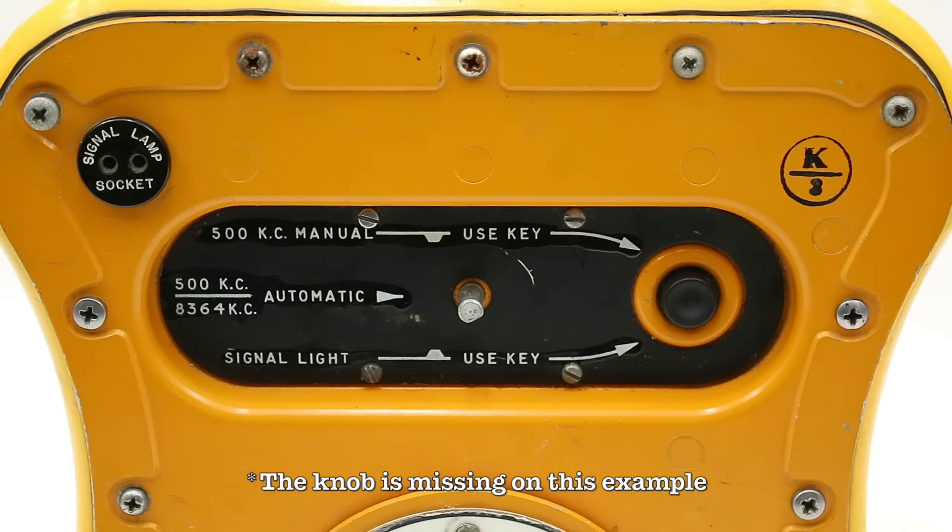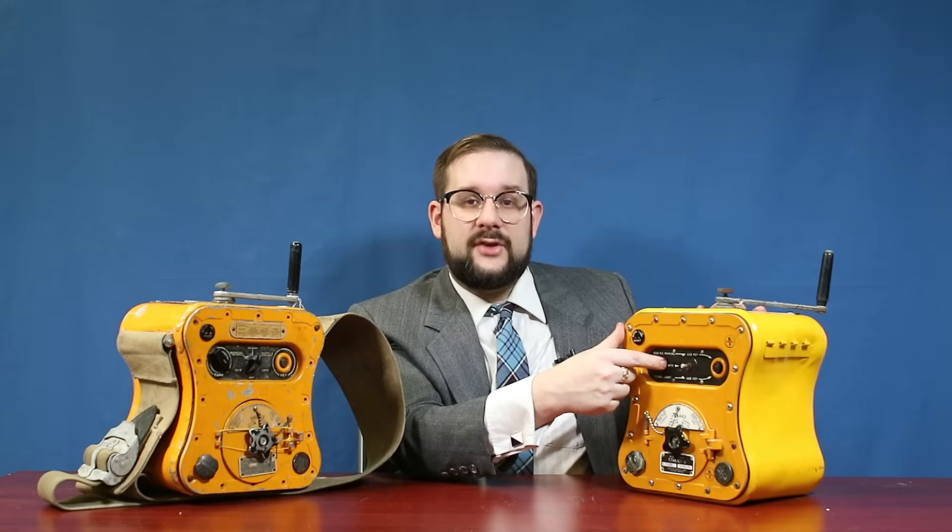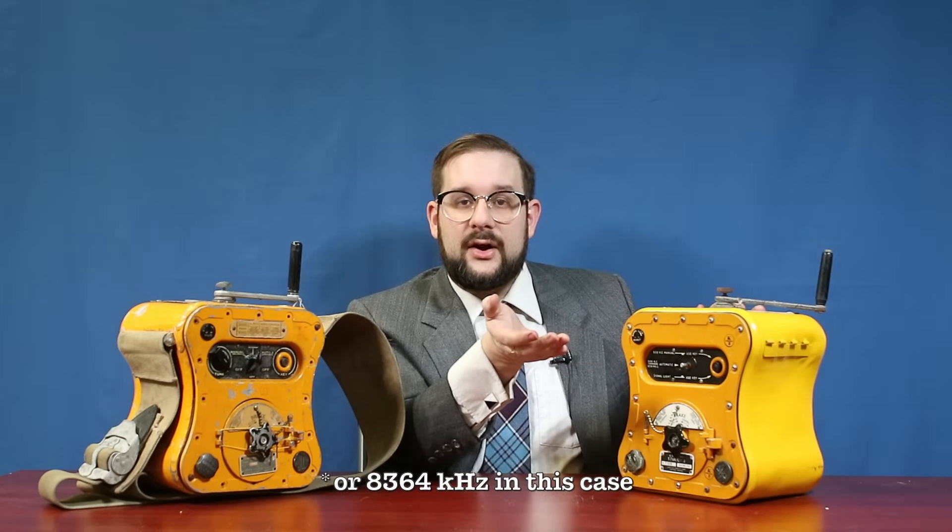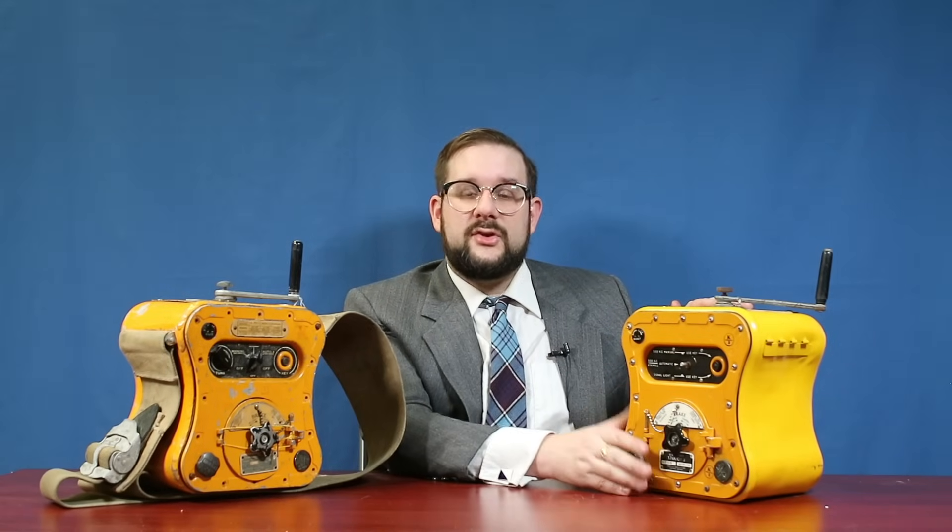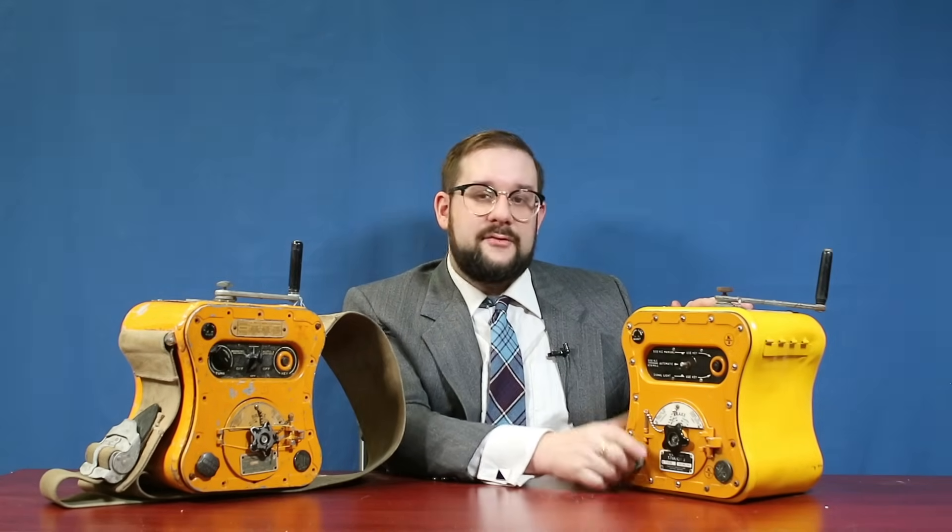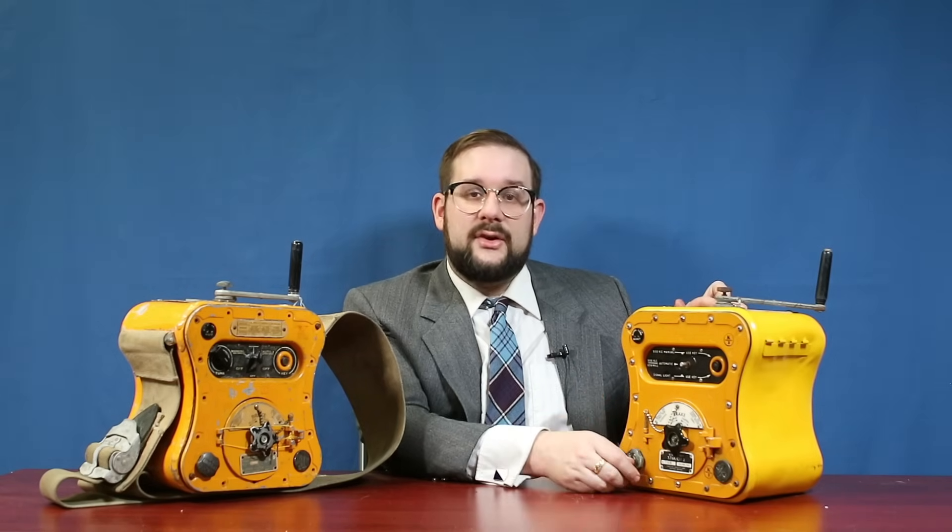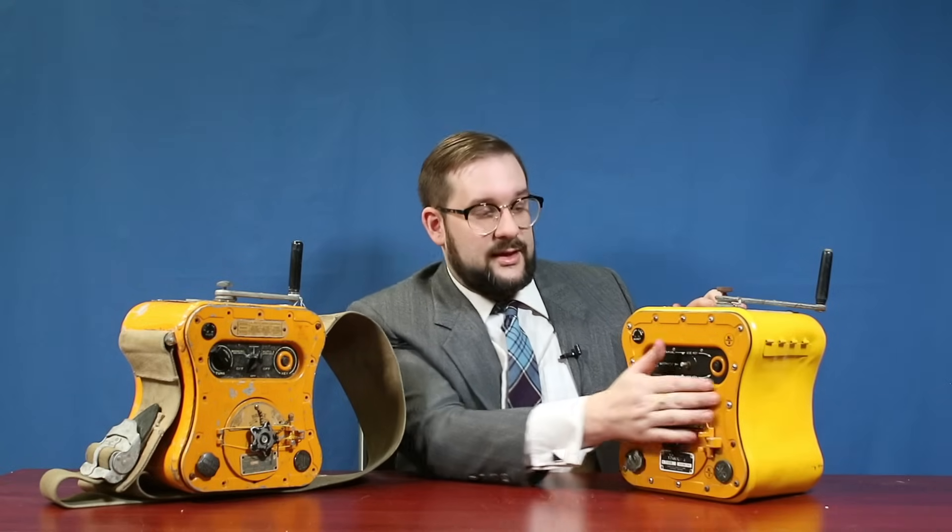Also, the mode selection knob now only has three positions. Manual radio signaling, a single automatic signaling mode which sends a string of SOS's for 20 seconds followed by a continuous tone for 20 seconds with the mechanism swapping between 500 kilohertz and 8,280 kilohertz every 40 seconds. And as we'll see a little bit later, these two signals were modulated in different ways. The 500 kilohertz signal via amplitude modulation or AM and the 8,280 kilohertz signal by interrupted continuous wave modulation. And then finally, the last position is manual signaling using the signal lamp.